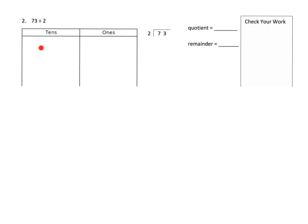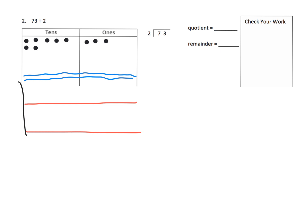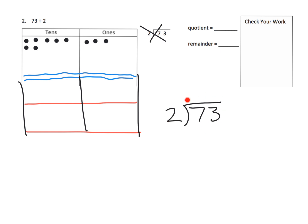We've got 73 divided by 2. The first thing we're going to do is model 73 — 1, 2, 3, 4, 5, 6, 7 for our 70, and then 1, 2, 3 for our 3 ones. We've modeled 73. Here are our two groups we're dividing by. Teachers, remember we want students saying '73 divided by 2,' not '2 divided by 73' — that would be incorrect. We want students to speak mathematically correctly.